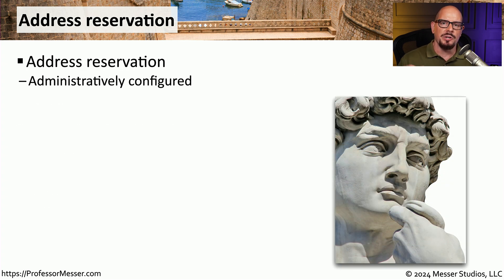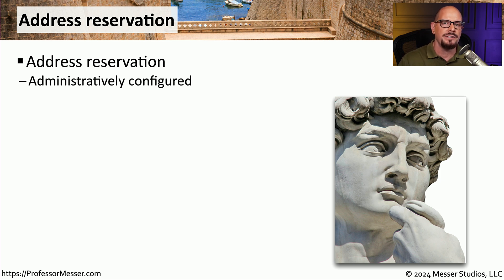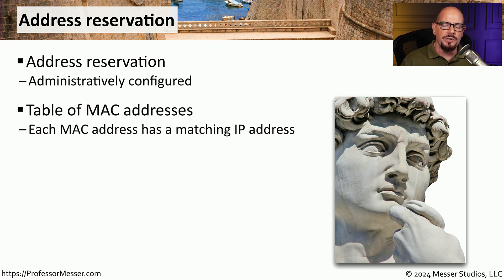If you wanted to configure an IP address on a printer or server and confirm that that IP address would never change, you could manually configure those settings on that device. But this does not scale very well, especially in large networks, and if you need to make a change you would need to manually visit all of those devices. Instead, you might want to lock in the IP addresses for those devices in the DHCP server using a feature known as address reservation. Inside the DHCP server, you would create a table with the MAC addresses of these devices, such as your printers and servers, and manually configure an IP address that will always be assigned to that particular MAC address.